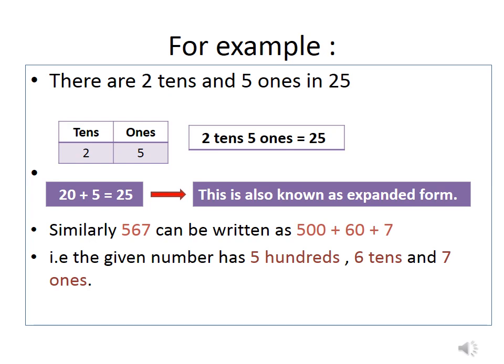Similarly, for a 3 digit number 567, you can write as 500 plus 60 plus 7. That is, the given number has 5 hundreds, 6 tens and 7 ones. As shown in previous slides, 5 is in 100's place so 5 can be written as 500, 6 is in 10's place so 6 can be written as 60 and 7 is in 1's place so we will write just 7. It will be clear with a few more examples.